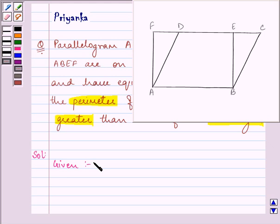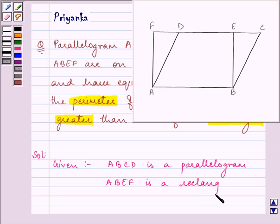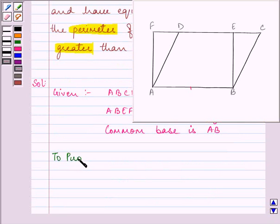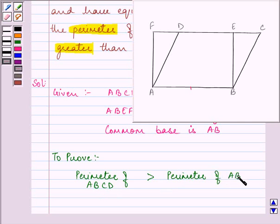We are given in the question that ABCD is a parallelogram, ABEF is a rectangle, and their common base is AB. Now, we need to prove that the perimeter of ABCD, that is the parallelogram, is greater than the perimeter of the rectangle, that is ABEF.